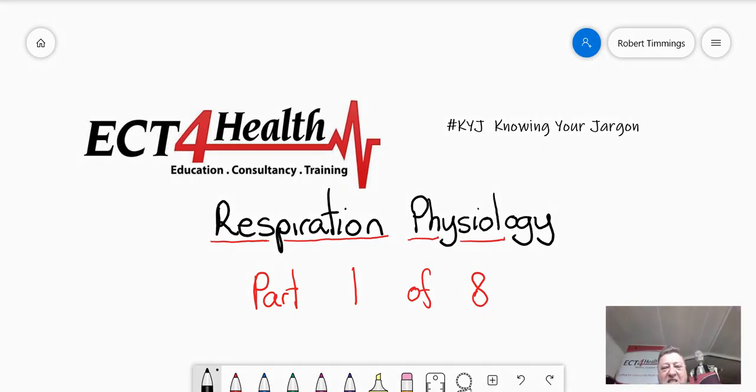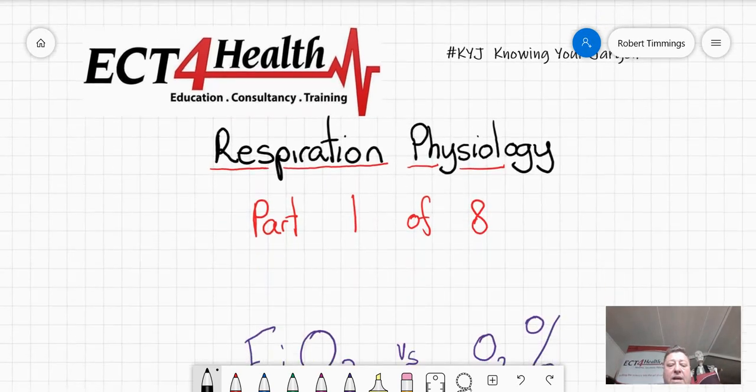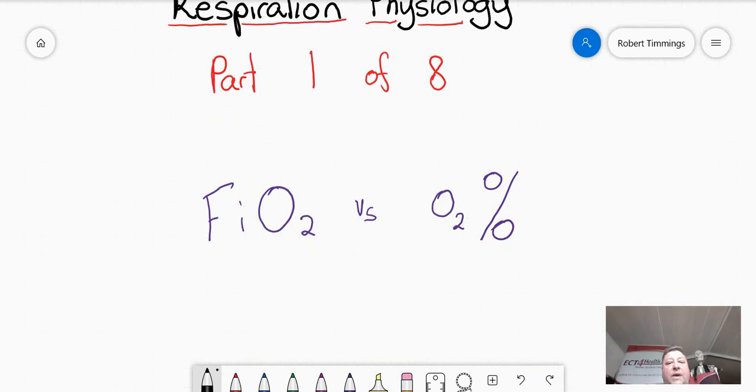Good morning, it's Rob Timmings from ECT for Health with another episode of Knowing Your Jargon. We're just about to embark on this mini-series. This particular mini-series is an eight-part, eight short videos that really look at unpacking some of the jargon around respiratory physiology. In this first episode of eight, we're going to be having a look at FiO2 and the percentage of oxygen. So let's get started.